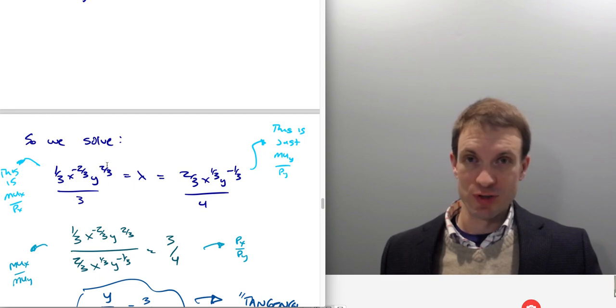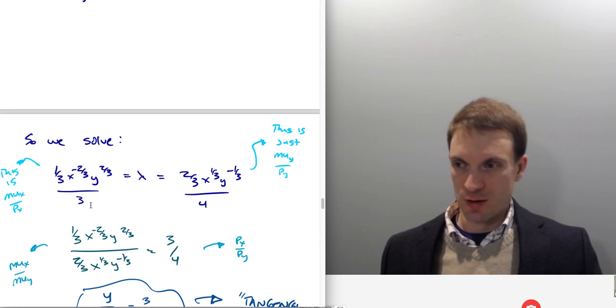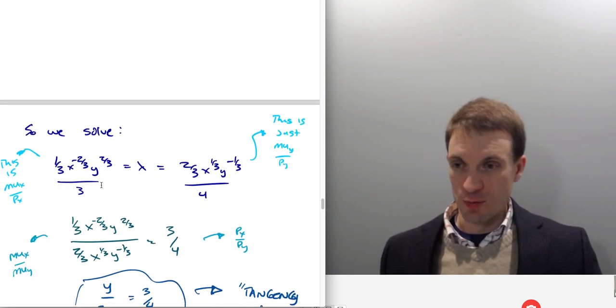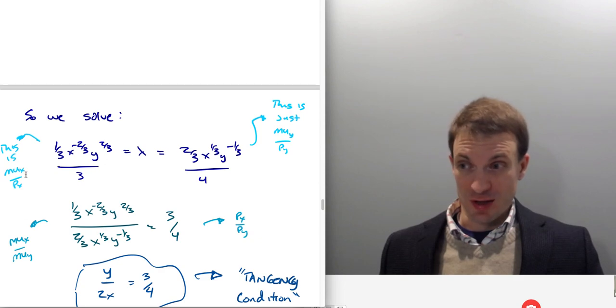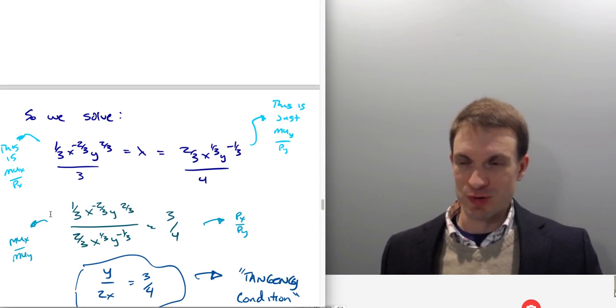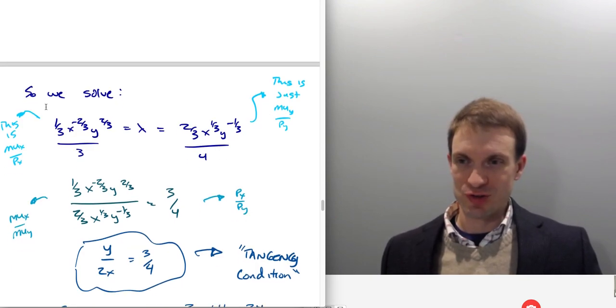That's MUX over PX. Here's my marginal utility of Y divided by price of good Y, MUY over PY. So this is my bang for your buck principle, that even goes back to Econ 101. And anyway, this is one and the same with the marginal rate of substitution equals the price ratio, as I show in this next line.